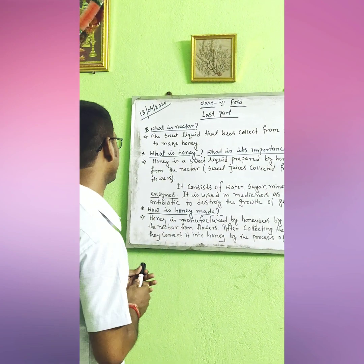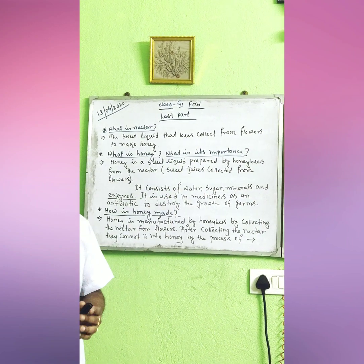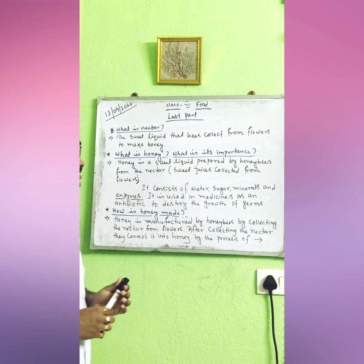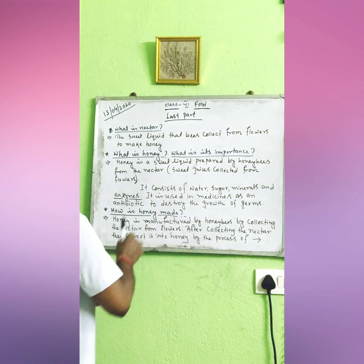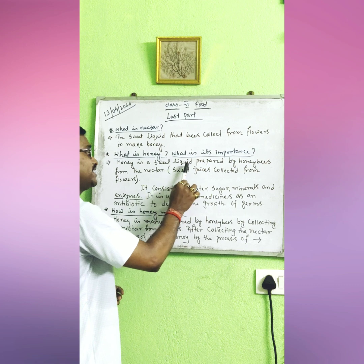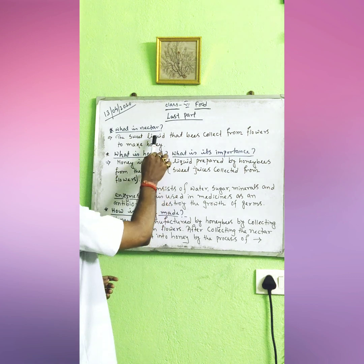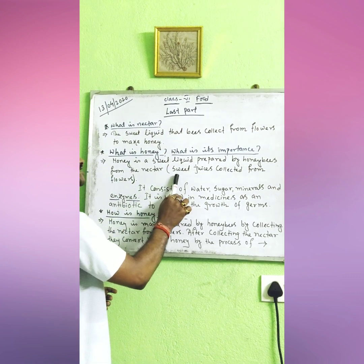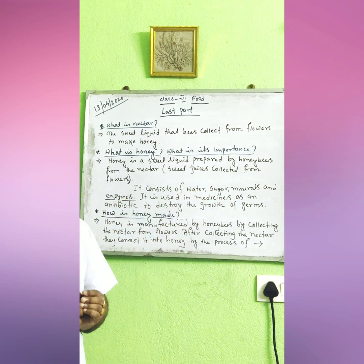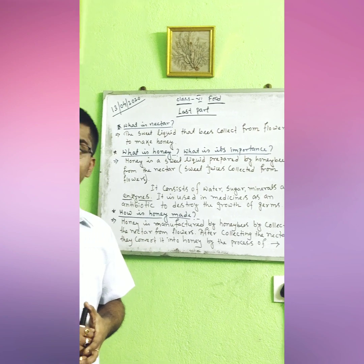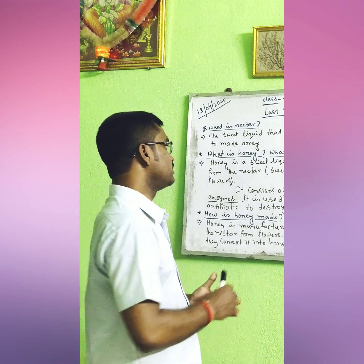Next question: what is honey and what is its importance? Honey is a sweet liquid prepared by honey bees from the nectar — the sweet juice collected from flowers. Honey bees collect this nectar from the flowers and with this sweet liquid they prepare the honey.